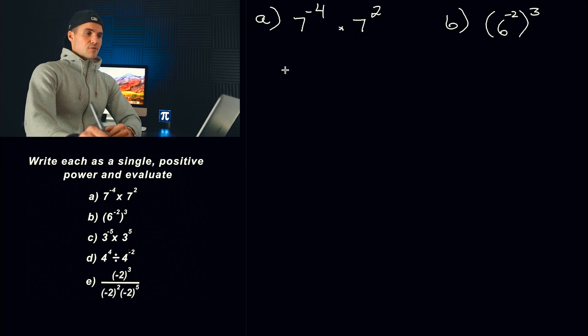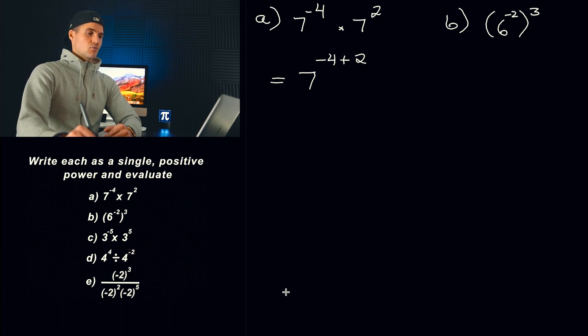And starting off with this first one, we got 7^(-4) × 7^2. So notice we're multiplying two exponential expressions with the same base, meaning that we can add those exponents and write it as one exponential expression. So the rule that we're using here is if we have A^x × A^y, we are just basically adding those exponents.